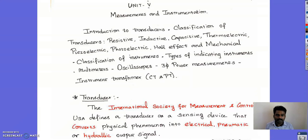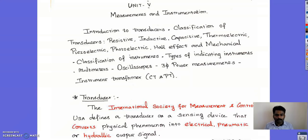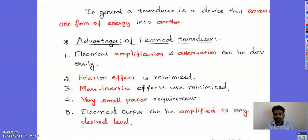Coming to the introduction of transducer: a transducer is a device which converts one form of energy into another form of energy. The International Society of Measurement and Control, United States of America, defines a transducer as a sensing device that converts a physical phenomenon into electrical, pneumatic, or hydraulic output signal. In general, we use transducer as a device which converts a physical quantity into an electrical quantity.